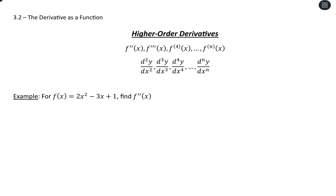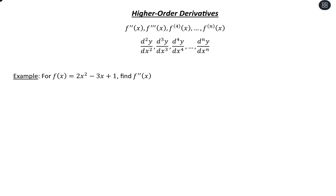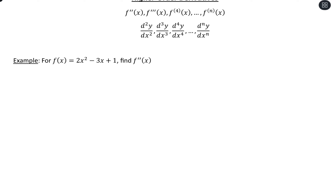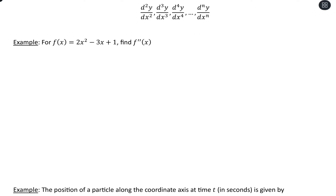So far, we've only been evaluating the first derivative, but we can keep taking the derivative function. We can look at second derivatives, third derivatives, fourth, fifth, all the way out to nth derivatives. So whatever level derivative we want to take, we can find that — it's really just applying the rules again. Let's take a look at an example where we're finding the second derivative, and then we'll look at an application.